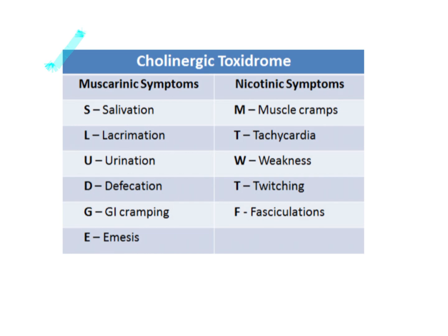The easiest way to remember the muscarinic symptoms is the mnemonic SLUDGE: S — Salivation, L — Lacrimation, U — Urination, D — Defecation, G — GI cramping, and E — Emesis. This is an important mnemonic to keep in mind for muscarinic symptoms.